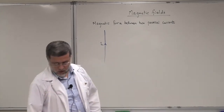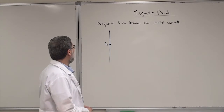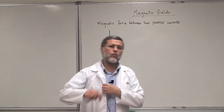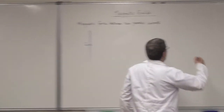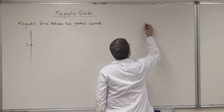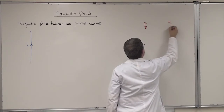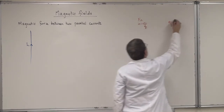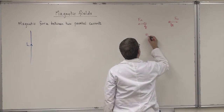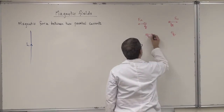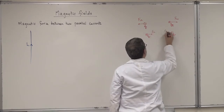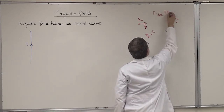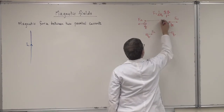Now we move to the concept of magnetic force between two parallel currents. Before we start, I want to remind you that in previous concepts we talked about electric force between two charges. If there are two positive charges Q1 and Q2, there will be repulsion F1, F2. If there are positive and negative charges, there will be attraction. This force is 1 over 4 pi epsilon-0 times Q1 Q2 over R squared, where R is the distance between the charges.